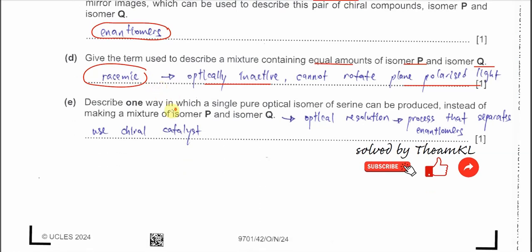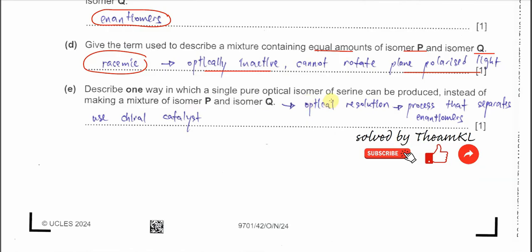Part E. Describe one way in which a single pure optical isomer of serine can be produced instead of making a mixture of isomer P and Q. Making a mixture of P and Q is actually referred to as optical resolution. In this method, the initial process produces similar amounts of P and Q, and then you separate them — but this is time-consuming and uses a lot of chemicals. The better and faster way to obtain a pure optical isomer is to use a chiral catalyst, which directs the reactants to form a specific optical isomer.